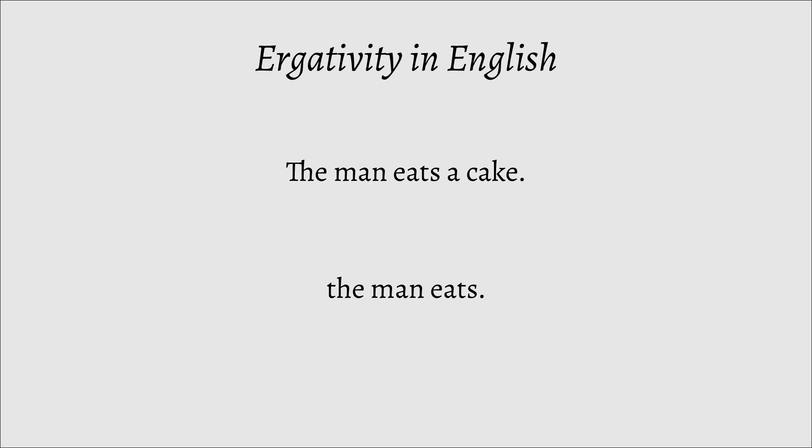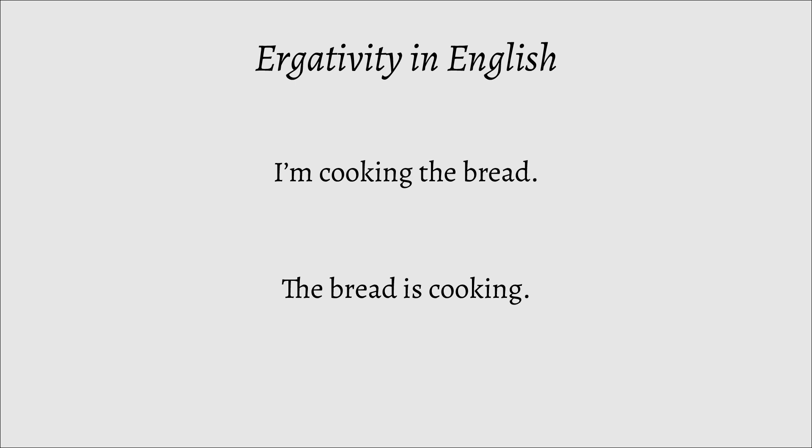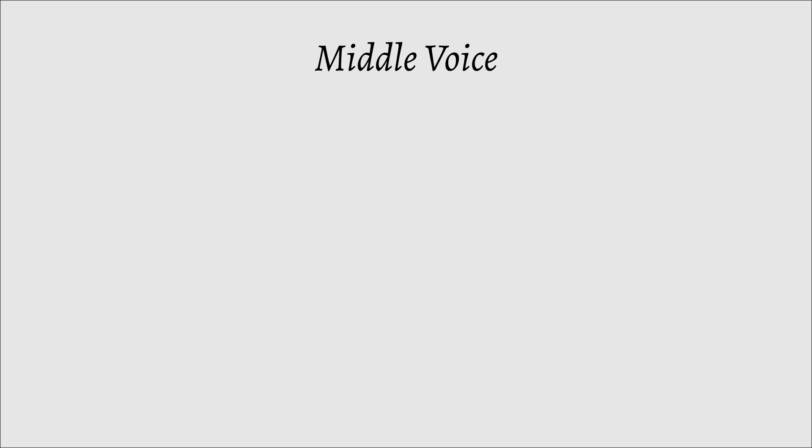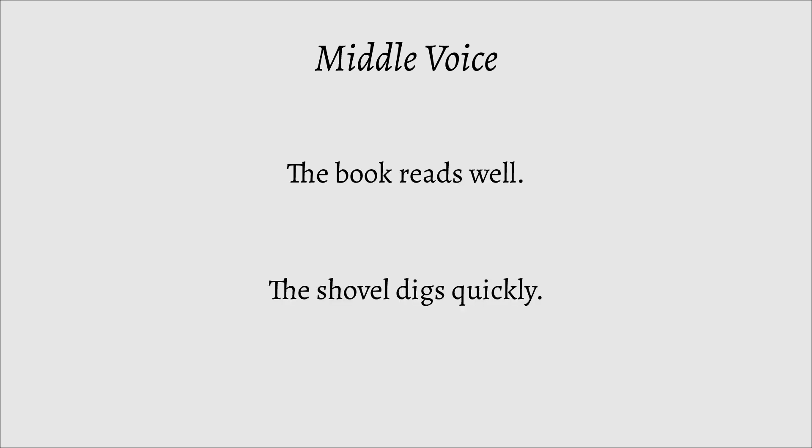Yes, you did hear me right — I said English, not Erglish. English possesses a bunch of verbs that are ambitransitive, meaning they can either be transitive or intransitive. Take to eat as an example: you can say the man eats a cake or the man eats, and both are acceptable. However, some ambitransitive verbs are ergative, where the object of the transitive form of the verb is the same as the subject of the intransitive form. Think: I broke the cup, or the cup broke. Another example is cook: I'm cooking bread, versus the bread is cooking. These semantically ergative verbs actually gave rise to a new grammatical formation within English, the middle voice, used for describing an object's quality or ability — think the book reads well, or the shovel digs quickly.